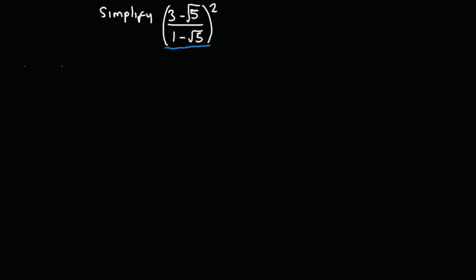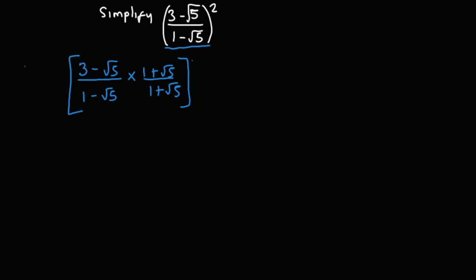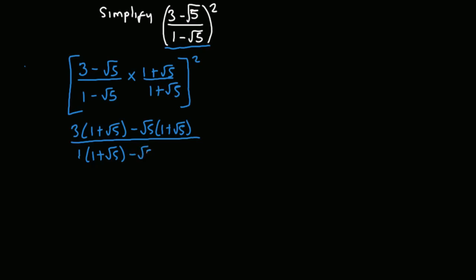So I'm going to simplify what we have in the bracket: (3 minus root 5) all over (1 minus root 5). What I'm going to do is multiply the numerator and the denominator by the conjugate of the denominator, which is (1 plus root 5) over (1 plus root 5), remembering that all of this is squared. So we have 3 multiplying (1 plus root 5), then negative root 5 multiplying (1 plus root 5), divided by 1 multiplying (1 plus root 5) and negative root 5 multiplying (1 plus root 5).